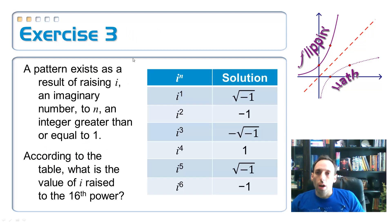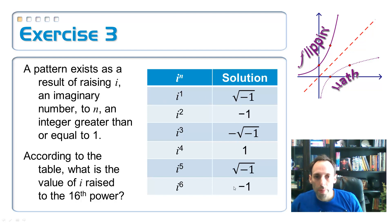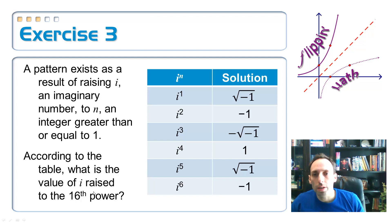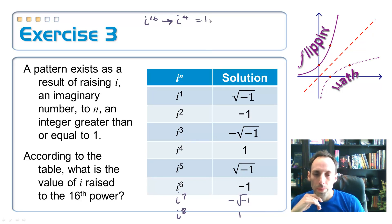Here's a question from a TAX test a few years ago involving imaginary numbers. A pattern exists as a result of raising i to n, some integer greater than or equal to 1. What is the value of i raised to the 16th power? Go ahead and pause the video and try to figure it out. You should have gotten the answer 1, and here's the reason why.